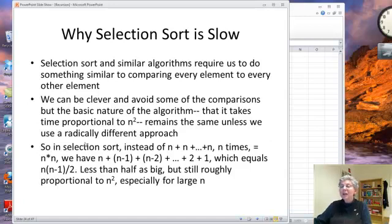So instead of an actual n squared, we have the sum of n plus n minus 1, n minus 2, and so on, which adds up to n times n minus 1 over 2, and that's less than half as big. But it's still roughly proportional to n squared, and that's what counts. Even half as big is too big very, very quickly.